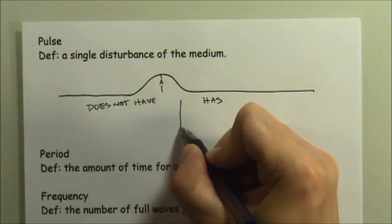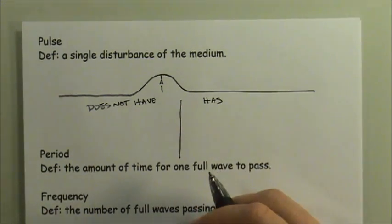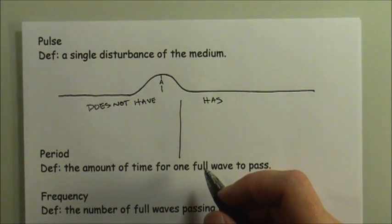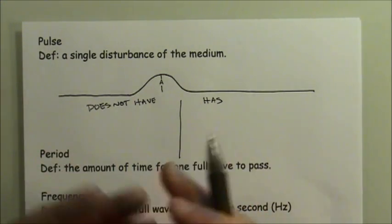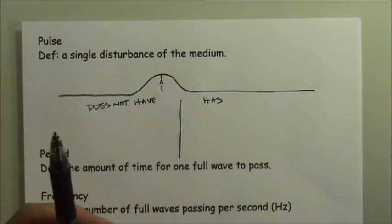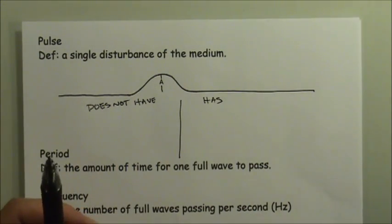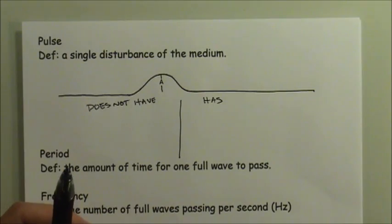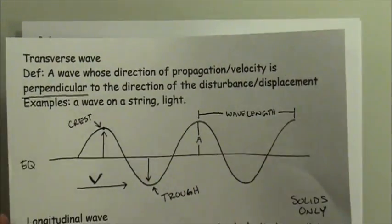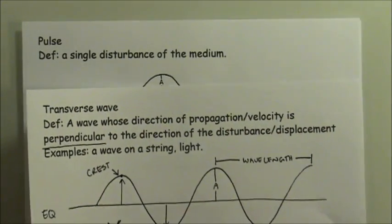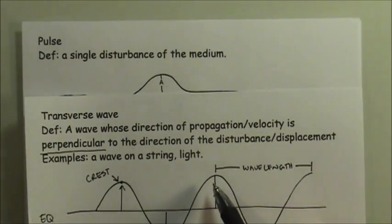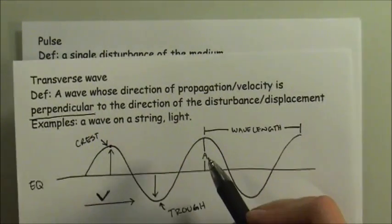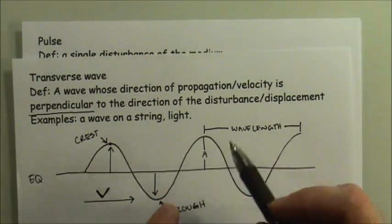We'll make two columns - 'does not have' and 'has.' One thing a pulse does not have is a period. It does not repeat itself. In the case of the traveling wave, it keeps repeating itself.